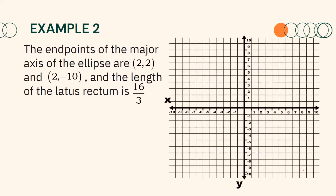Again, we may plot the given on a Cartesian plane. We can plot the endpoints of the major axis at (2, 2) and (2, −10). Since the major axis of our ellipse is a vertical line, it follows that our ellipse is a vertically oriented ellipse. Moreover, the center of our ellipse is the middlemost point between the two vertices, so the center is the point (2, −4).